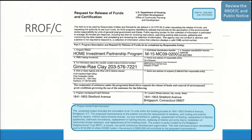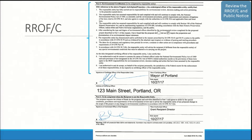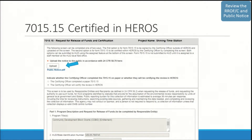The uploaded 7015-15 will also appear in another internet window. Check the date on the form at the top right to be sure it is not expired. Review the 7015-15 for required information such as the project name, contact information, location, and project description. On the second page of the 7015-15, you will find the certifications by the certifying officer or their designee under Part 2. Be sure that the 7015-15 is signed and dated.